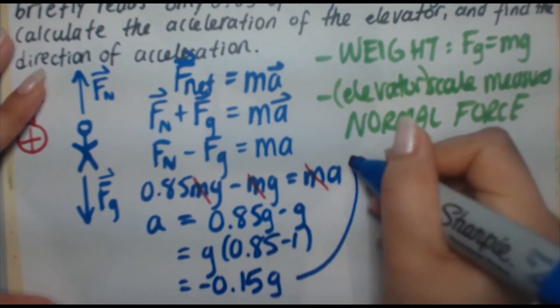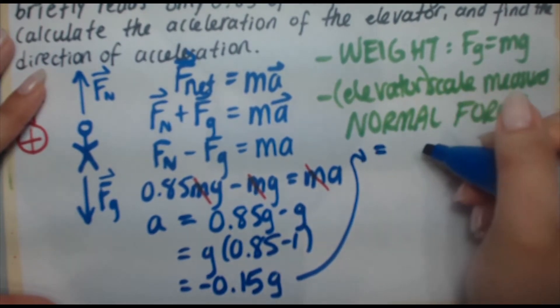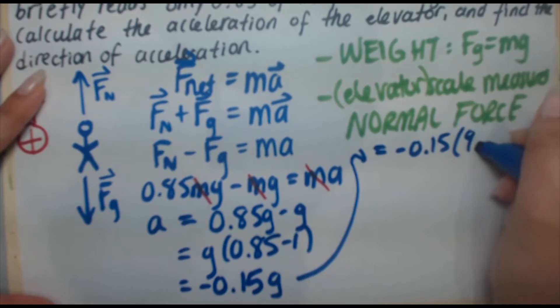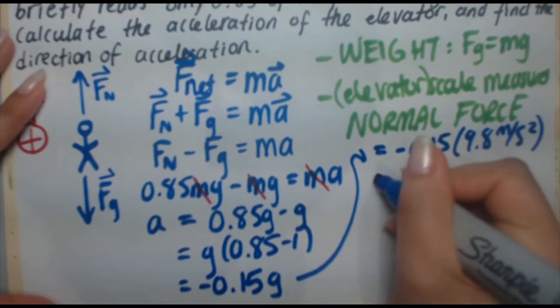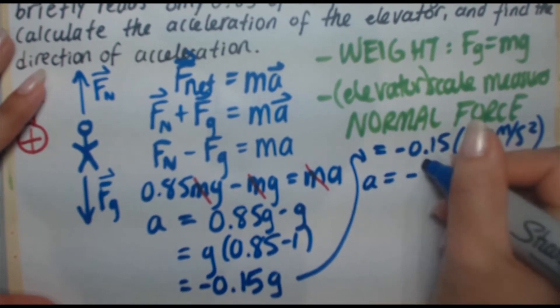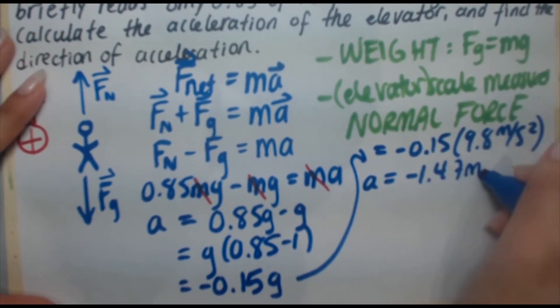Now, we know g. g is 9.8 meters per second squared. So, plug that in. When you calculate this expression out, you're going to get a is equal to minus 1.47 meters per second squared.